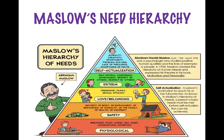Once love and belonging needs are satisfied, a person moves towards esteem needs — self-esteem, confidence, achievement, respect of others, and respect by others. Many people finish their lives at the esteem level and are not able to reach self-actualization. Self-actualization is a person's motivation to reach his or her full potential, and includes morality, creativity, spontaneity, problem-solving, lack of prejudice, and acceptance of facts.